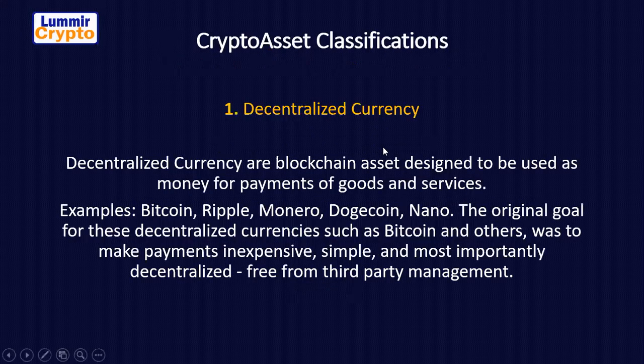First, we have crypto asset classifications. We say crypto asset classifications rather than cryptocurrency classifications because we have crypto assets — it's different from cryptocurrency. Cryptocurrency is among them, but these are all classes of assets because it's something you buy with your money. You have it, it is your property, and you decide what to do with it at any time.